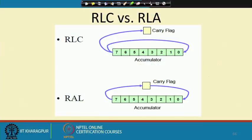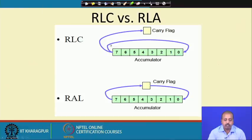To compare between RLC and RLA, this diagram will tell that. The accumulator is 8 bits wide. When rotating left, this is the left rotation: bit number 7 will go to bit number 0 as well as to the carry flag of the status register. Both get modified, and bit 0 will come to bit 1, bit 1 will come to bit 2 — the entire thing is rotated left like this.